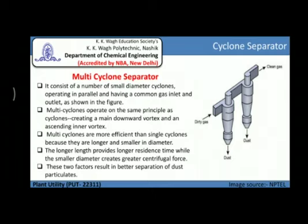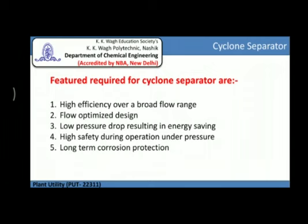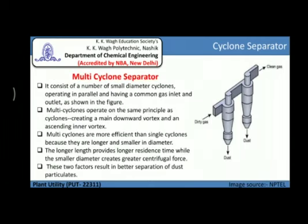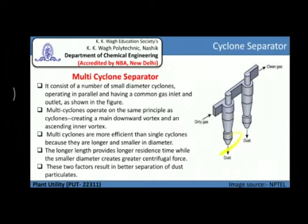For achieving higher efficiency of gas purification, cyclone separators are arranged in parallel, and this is called a multi-cyclone separator. It consists of a number of small-diameter cyclones operating in parallel with a common gas inlet and outlet. Multi-cyclones operate on the same principle as single cyclones, creating a main downward vortex and an ascending inner vortex. Multi-cyclones are more efficient than single cyclones because they are longer and smaller in diameter. The longer length provides longer residence times while the smaller diameter creates greater centrifugal force, resulting in better separation of dust particulates.